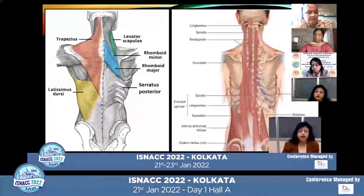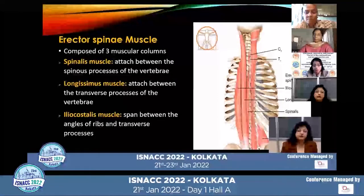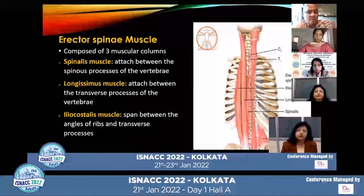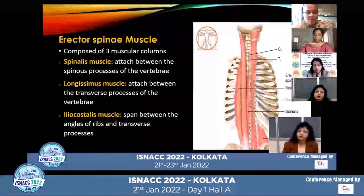The erector spinae muscle lies just deep to the thoracolumbar fascia. The erector spinae muscle is composed of three muscular columns which lie on both sides of the vertebral column. The spinalis muscle attaches between the spinous processes of the vertebrae, while the longissimus muscle attaches between the transverse processes of the vertebrae.